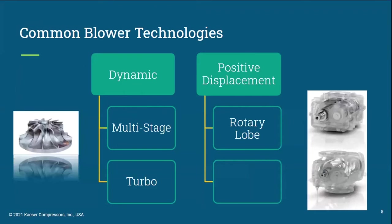There are many different blower technologies available, but we will focus on just a few of them today. We'll break this down into two different categories: dynamic blowers and positive displacement blowers. For dynamic blowers, we typically see multi-stage centrifugal and turbo blowers. Multi-stage centrifugal blowers are one of the older technologies that has been around for decades and has been the workhorse of many plants around the world. Turbo blowers are a newer technology that has really taken off over the past 10 years with improved bearing and motor technology.